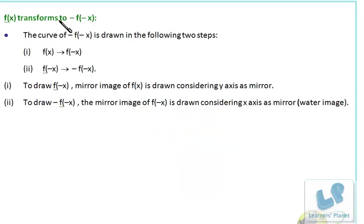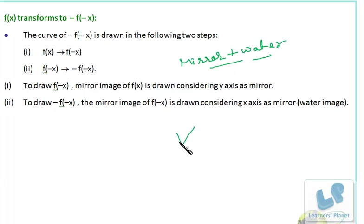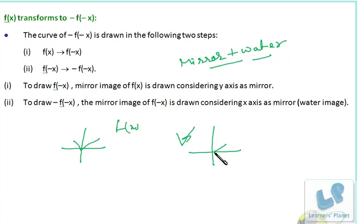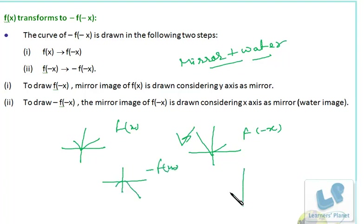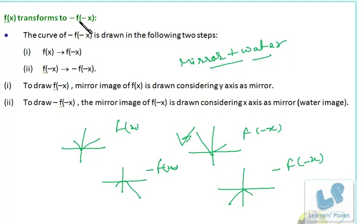Now f(x) transforming to -f(-x) — that is mirror plus water. First draw f(-x), which is the lateral or horizontal inversion. Then take -f(x), and from that you take the water image. So -f(-x) is obtained by applying both transformations — first mirror, then water image.